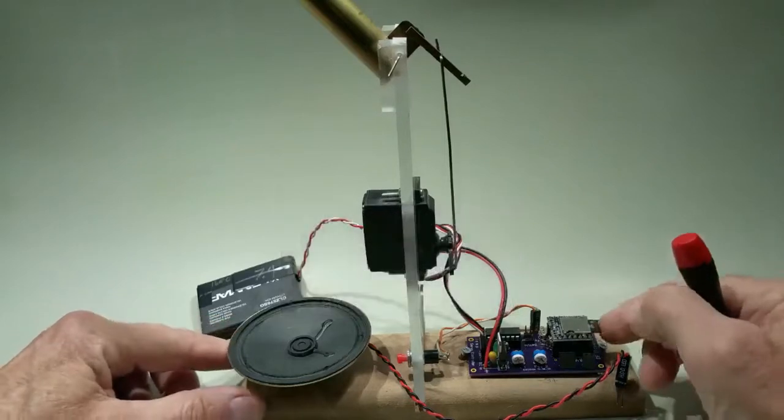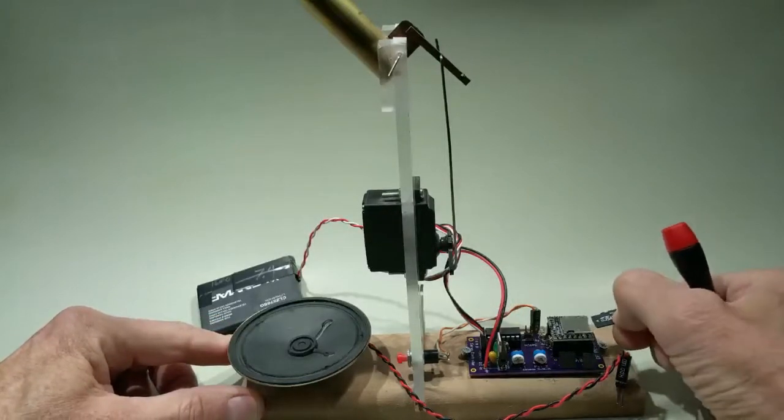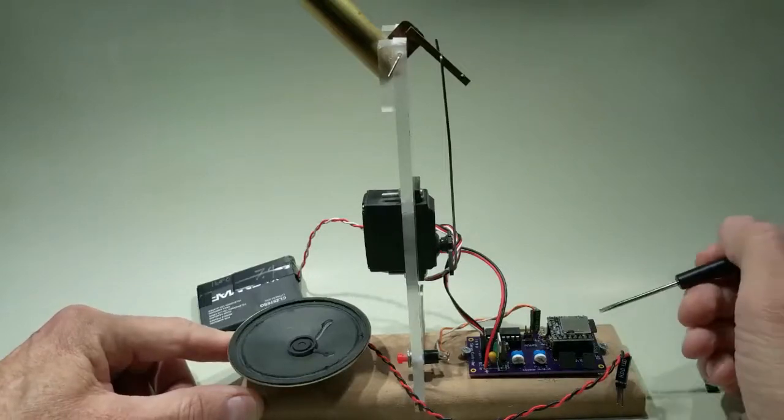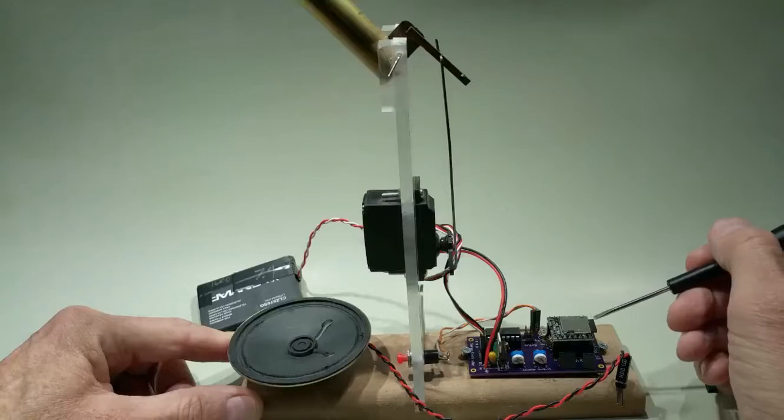In the MP3 player is a micro SD card. This is a one gig card, which is more than enough for the files we need to store. That has the six files that we'll be using.